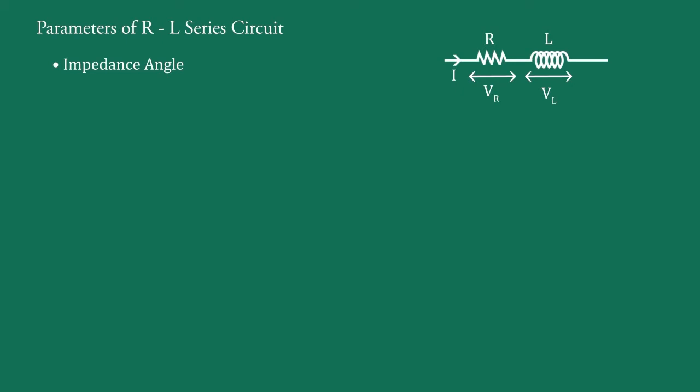In this circuit, the total impedance is Z equal to R plus XL, or this is equal to R plus j omega L.